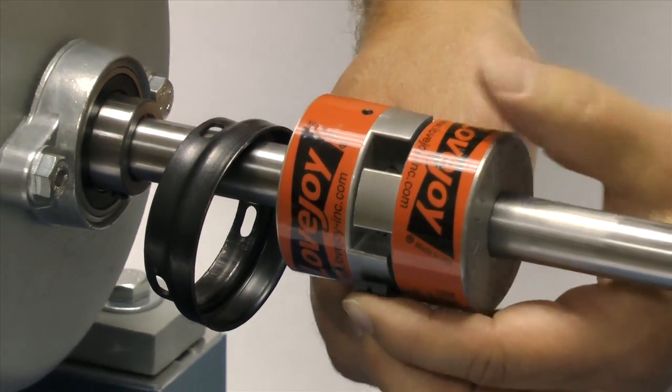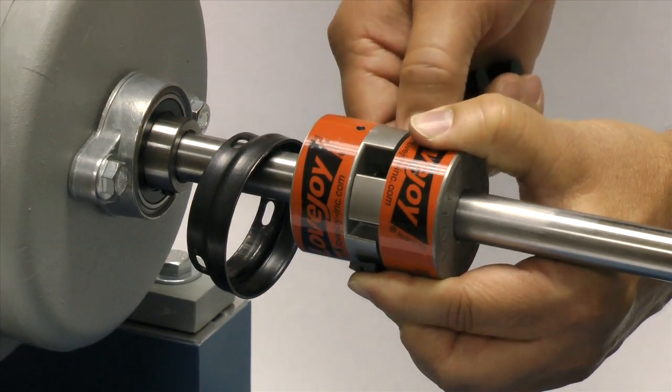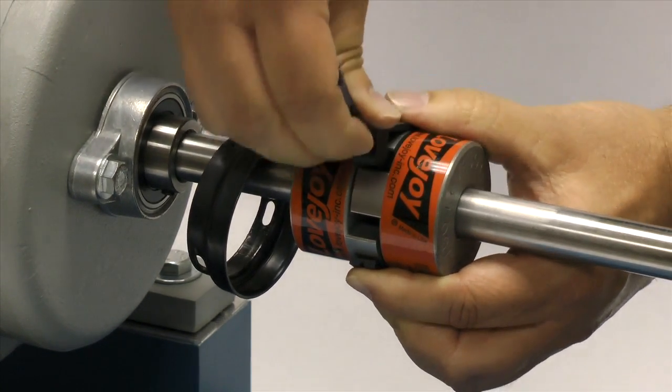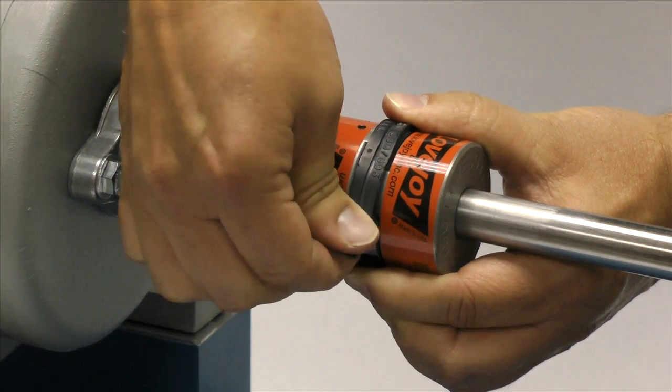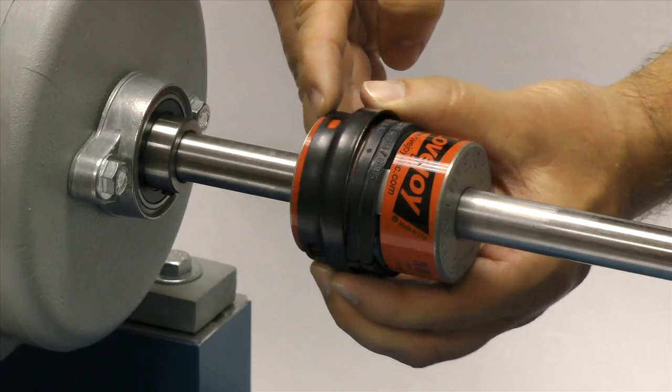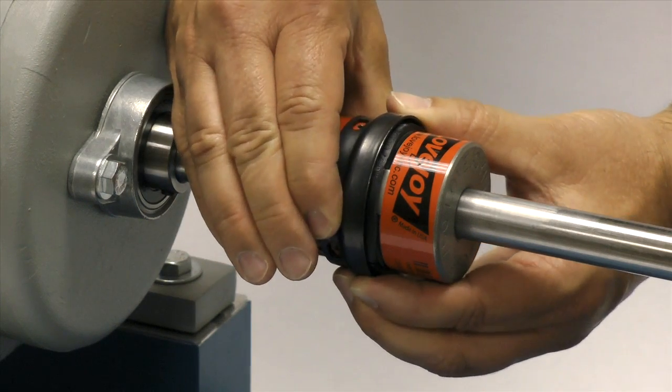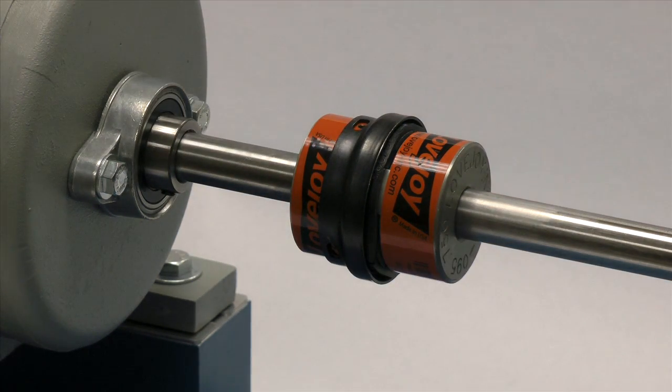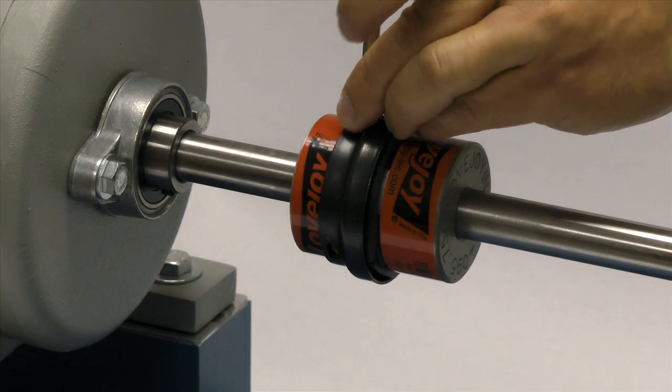Next we will wrap the spider around the coupling, inserting the legs of the spider between the jaws of the two hubs. Then slide the collar over the spider and rotate the collar until the holes in the collar line up with the tapped holes in the hub. Insert the screws and tighten using a Phillips head screwdriver.